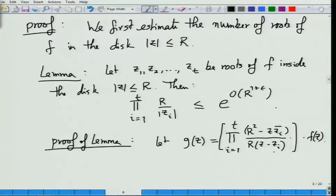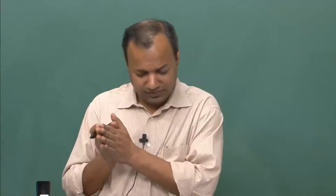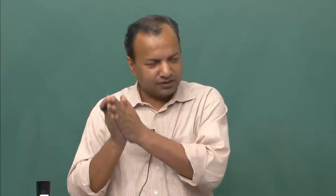This g is simply f multiplied with a certain product. The idea is to take away all the zeros of f inside the disk. What we are doing is dividing f by the product (z - z_i), which takes away all the zeros, but the rest of the multiplier is to ensure that |g| does not blow up and stays bounded by |f| around the boundary.